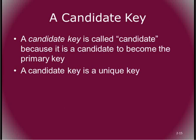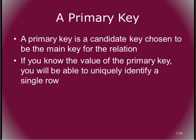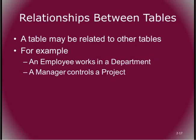A candidate key is when a table has multiple fields that could each serve as a primary key. In a health record, for instance, we might have a unique patient record identifier and also a social security number — both are unique, so either could be the primary key, making them both candidate keys. The primary key is the candidate key we choose as the main key for the relation. If you know the primary key, you can uniquely identify any row in that table.